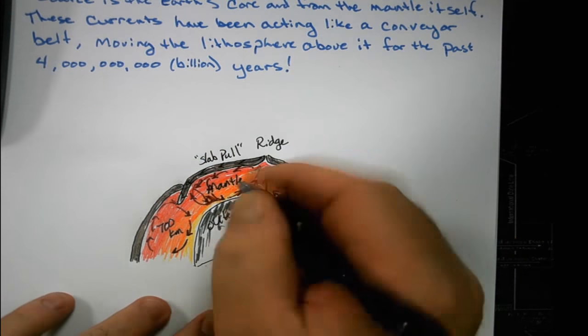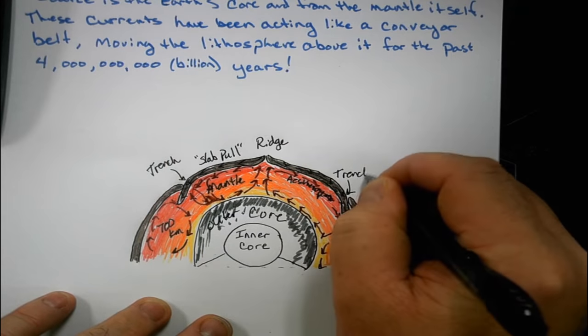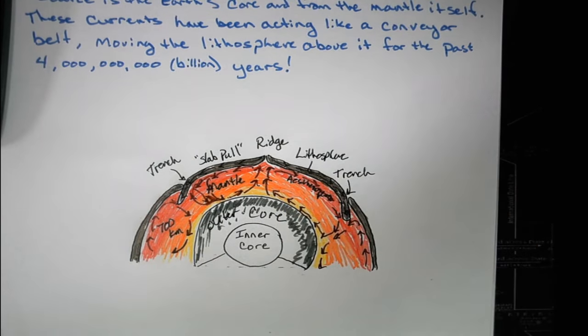The ridge is the part where the mantle is flowing up and it pokes through the surface. When it pokes through the surface, we create things like volcanoes or mid-ocean ridges, and it causes the sea floor to start spreading, which we'll get to in a later lecture.